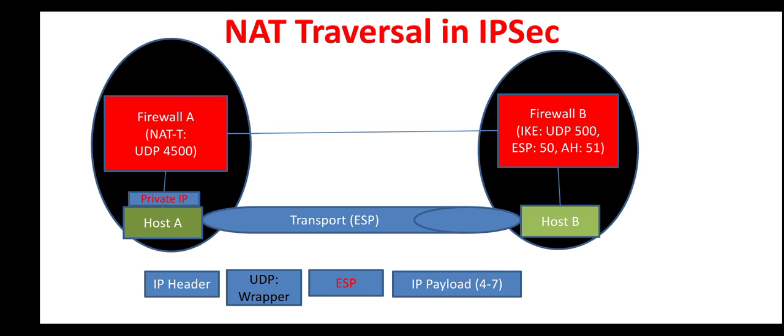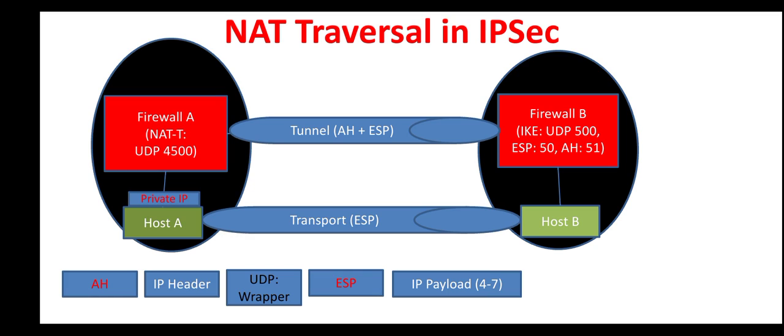We can also establish another IPsec VPN in tunnel mode, which tunnels the transport mode VPN inside it. By doing that, an authentication header is inserted before the IP header, which provides authentication to the IP header — not encryption, but authentication only. If there is any change in the IP header data, that change would be detected. Since firewall A and firewall B are establishing this tunnel VPN to encapsulate the transport layer VPN, each firewall knows they are also using NAT traversal.